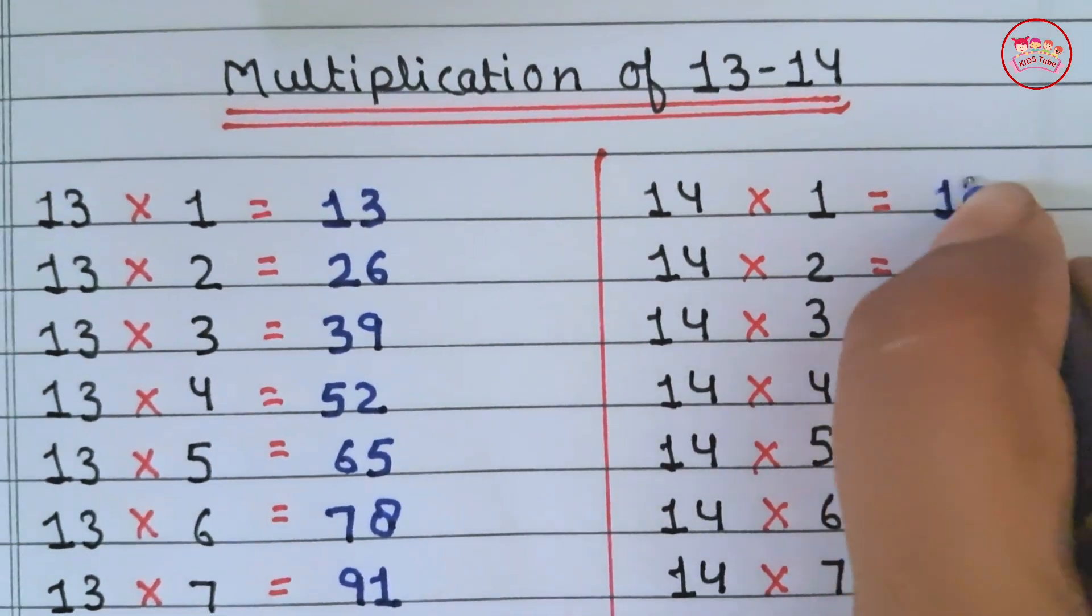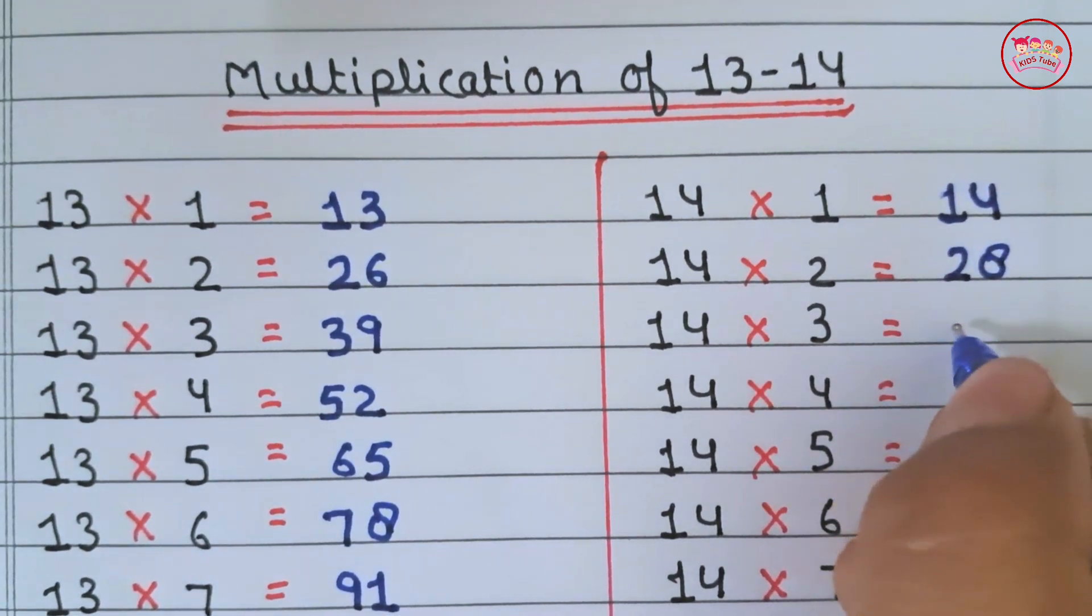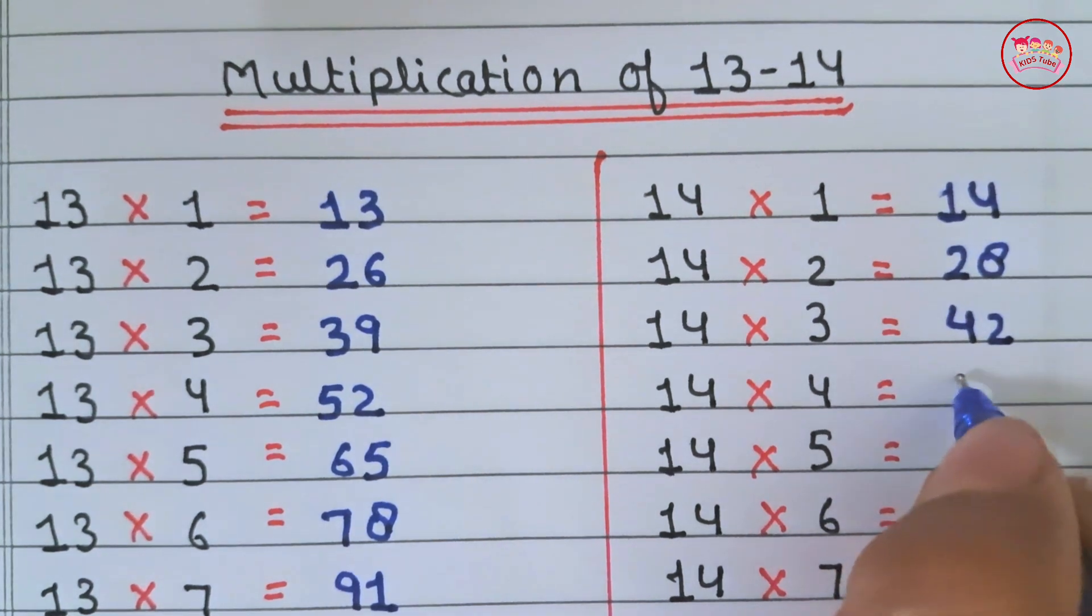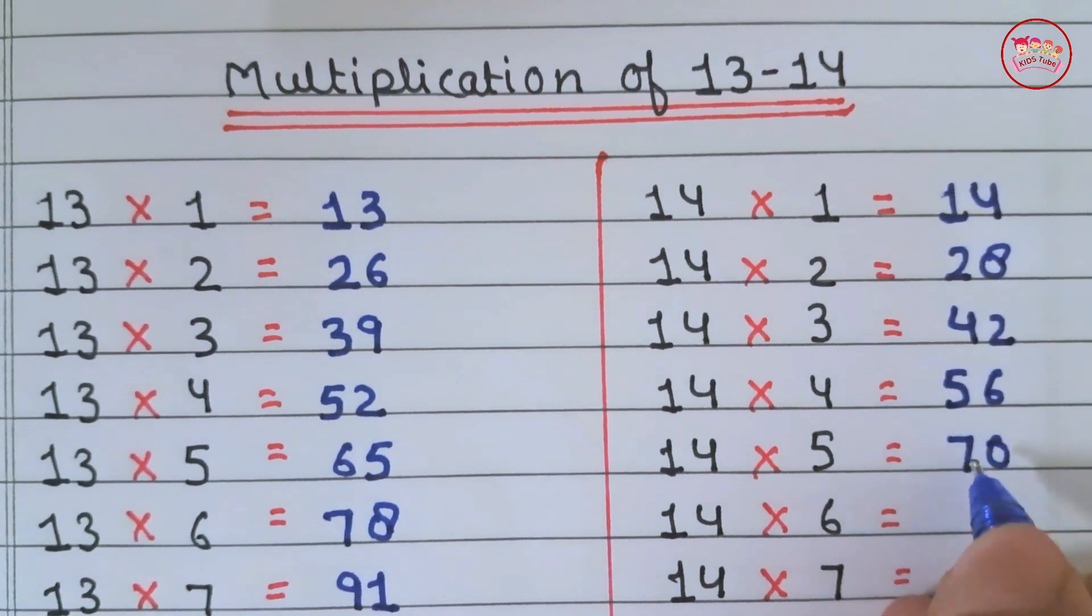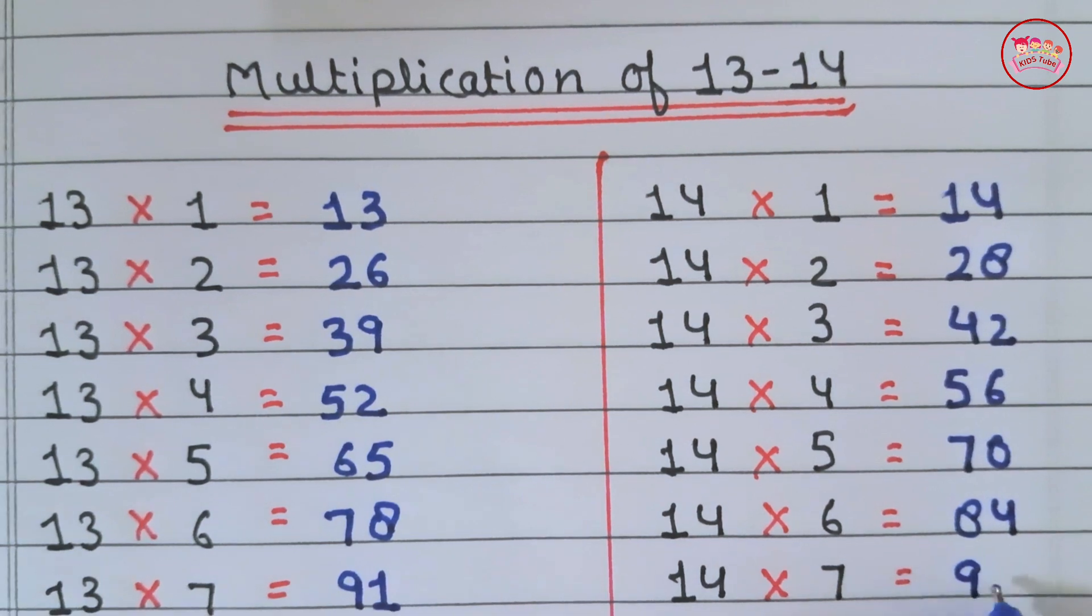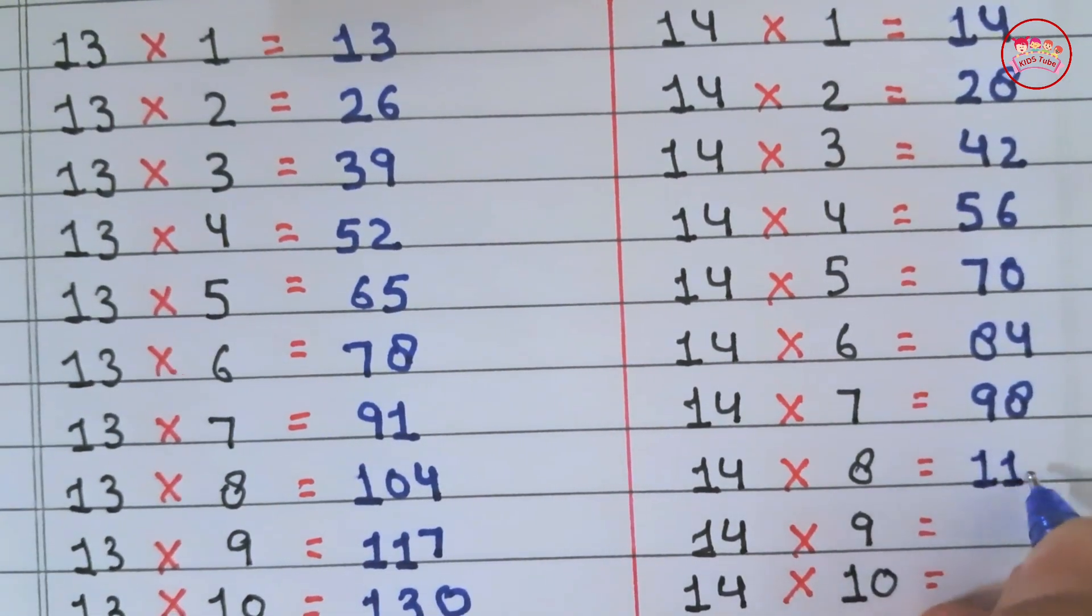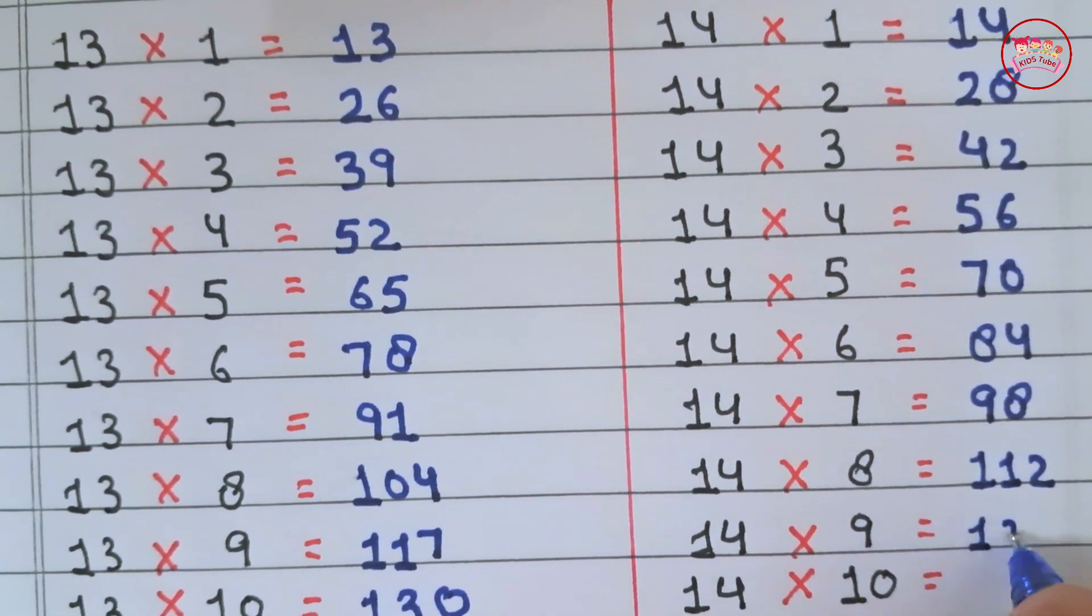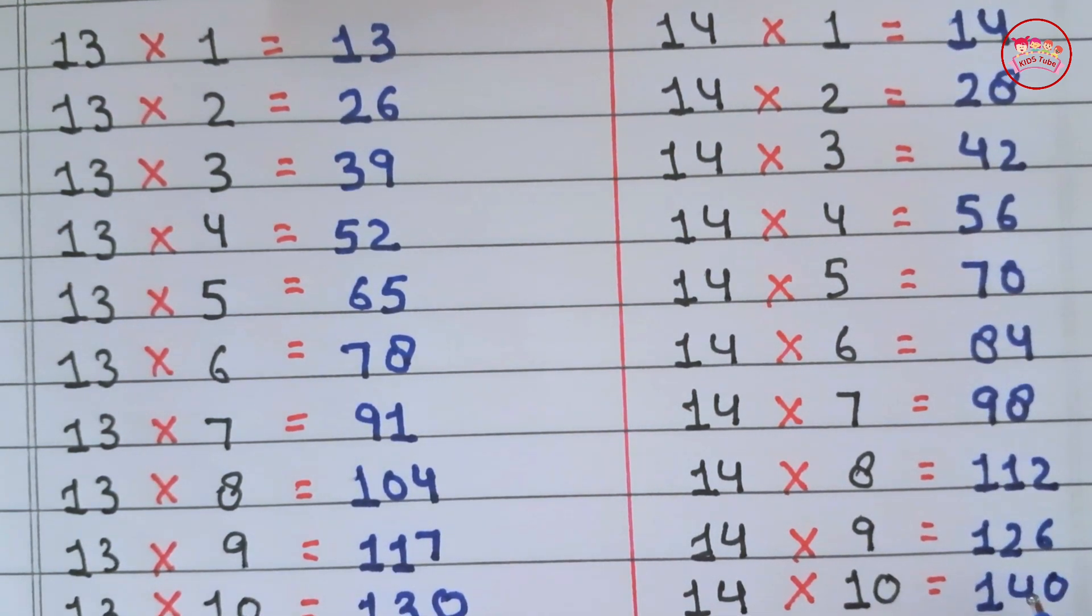14×1 is 14, 14×2 is 28, 14×3 is 42, 14×4 is 56, 14×5 is 70, 14×6 is 84, 14×7 is 98, 14×8 is 112, 14×9 is 126, 14×10 is 140.